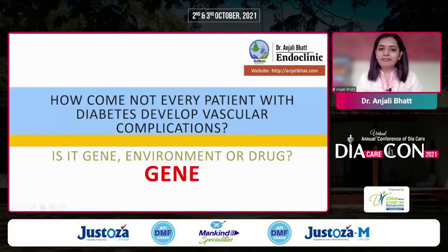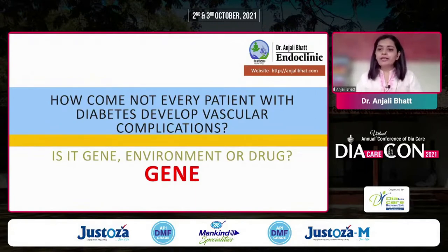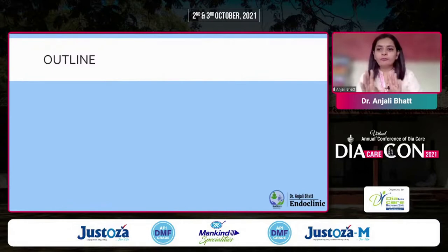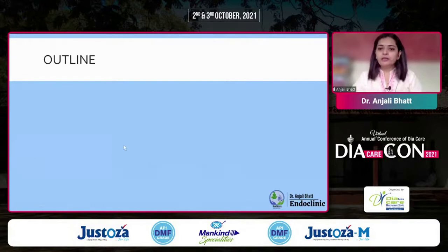The topic is: how come not every patient with diabetes develops vascular complications? Is it gene, environmental, or drug? It's probably all of them, but I'm supposed to give you an account of the genes that are going to contribute. To bring this vast topic down to a 10-minute outline, I've decided to talk on four important points about what genes are going to contribute.